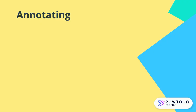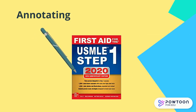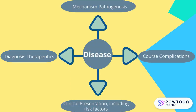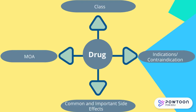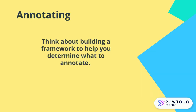Annotating. As stated before, most students annotate right into First Aid. You'll be adding any relevant information that you don't already know. For every disease, you should note the pathogenesis, course complications, clinical presentation including risk factors, and diagnosis and therapeutics. And for every drug, you'll want to know the class, indications and contraindications, common and important side effects, and the mechanism of action. Start to think about building a framework when going through your questions — this will help you determine what to annotate. Let's take a look at a sample question.